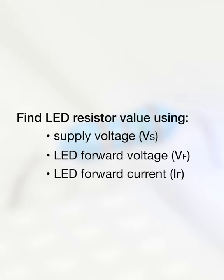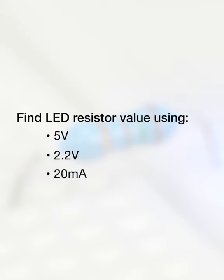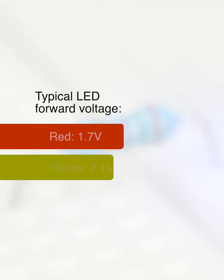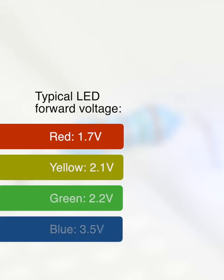You should be able to find those last two in the LED's product page or datasheet. When you can't find a specific forward voltage for an LED, you can try using common values for a given LED color.